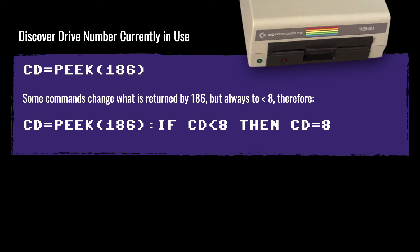We can also discover the current drive number. A lot of programs assume that everybody's using ID 8, which may be true. But if you've got two drives, or in a modern scenario using an emulator or an SD card reader, you may have one of the drives set to drive 9. If the program is hard-coded to expect drive 8, then you've got a problem. Using this command, we can PEEK 186 to find out what the current drive number is, and then work accordingly.